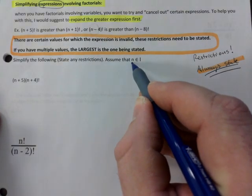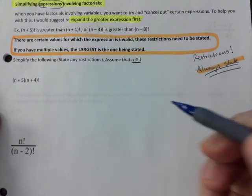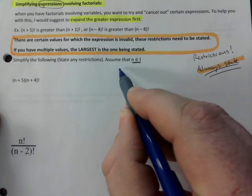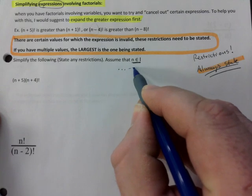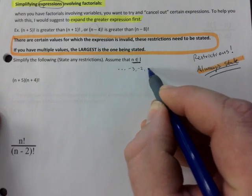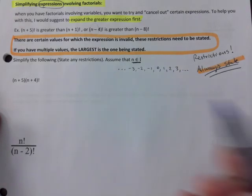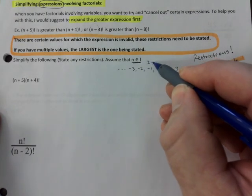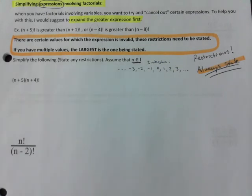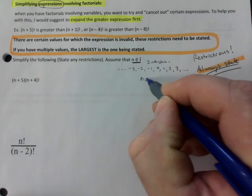Remember, n can be any integer — negative 3, negative 2, negative 1, 0, 1, 2, 3, going on to infinity. That's integers — all whole numbers including zero, both positive and negative — but no decimals. If you get a decimal for n, go back and check.